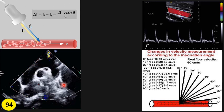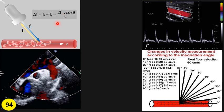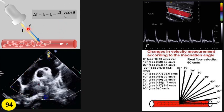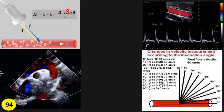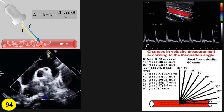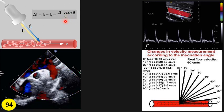There is a formula here for how the machine calculates the velocity of blood flow. The machine can detect the reflected frequency, and by knowing the angle of insonation it can calculate the velocity of the moving object — in this case, blood flow. We also know C, the sound wave velocity in tissue in the body.